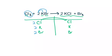Remember, this is the same as if it was written like this. Now on my product side, I have again two Ks, two CLs, and two BRs. So this is a balanced equation.